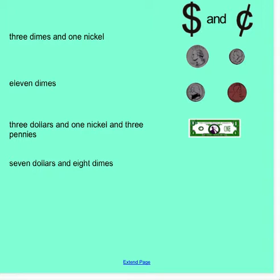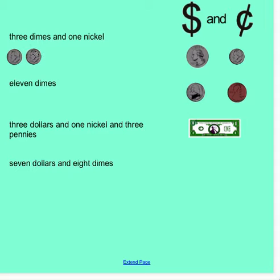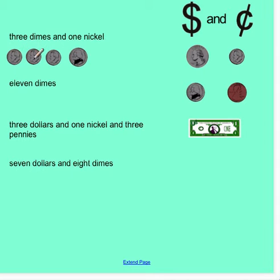Now we're going to take a look at some number sentences and we are going to write them using dollars and cents notation. I have three dimes and one nickel. We'll pull over three dimes — one, two, and three — and one nickel. Each of my dimes represents 10 cents, so I can count by tens: 10, 20, 30, and I know my nickel represents 5, so 35.